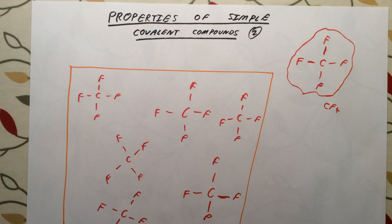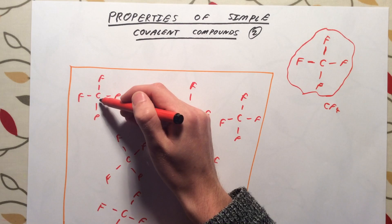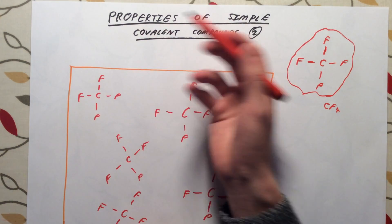So why is this the case? Why don't these molecules all join together and form a solid structure like an ionic compound would? Well, the answer lies in the strength of the forces between these molecules. These covalent bonds between the atoms within a molecule are actually very strong. It's very difficult to break or overcome these forces. It requires a lot of energy.